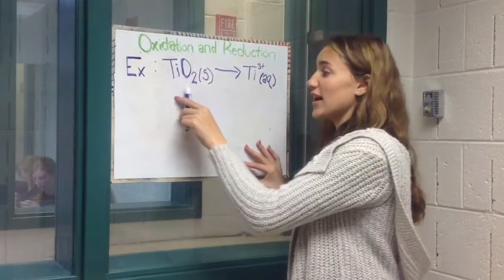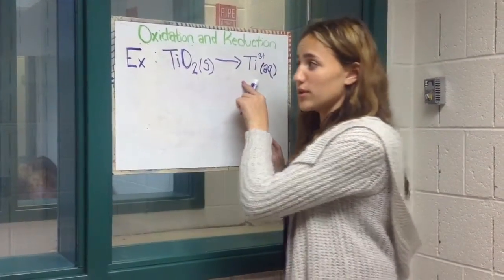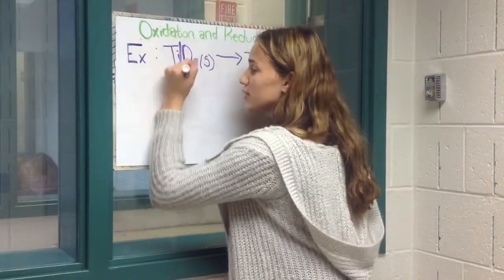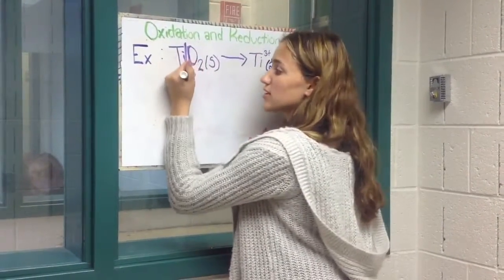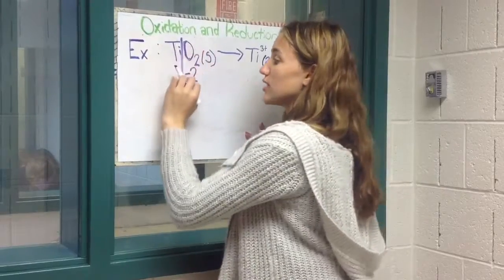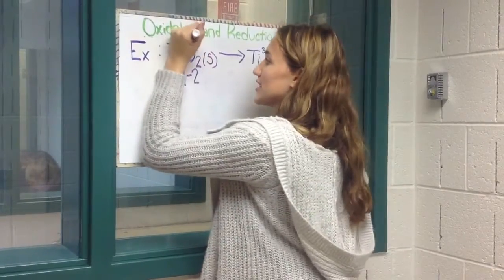Our second example is TiO2 yielding Ti3+. You have to break this into its ions, and oxygen comes first, and it usually has a negative 2 charge. So negative 2 times 2 is negative 4.